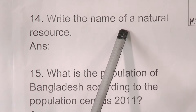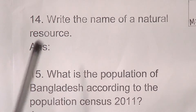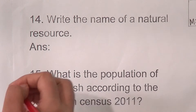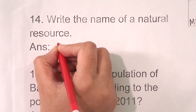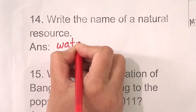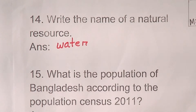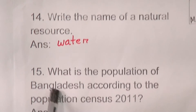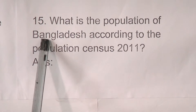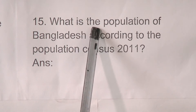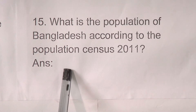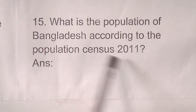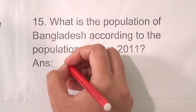Number 13: who mainly destroys the natural environment? The answer is human being. Number 14: write the name of a natural resource — you can write water, plant, or tree. I will write here: water. Number 15, the last one word answer: what is the population of Bangladesh according to the population census 2011? The answer is about 15 crore.